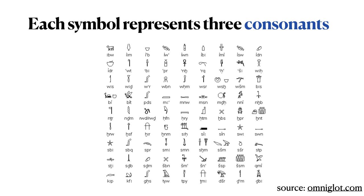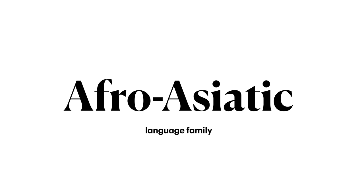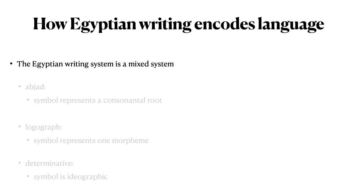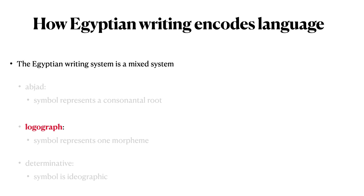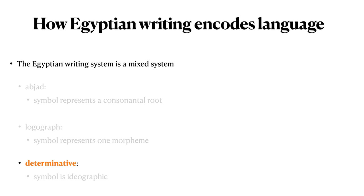You can do something not terribly dissimilar from this in English by taking an English sentence and pulling out the vowels — chances are you'll still be able to read the sentence. So, Egyptian is a mixed system with an abjad where symbols represent consonantal roots, logograph symbols that represent a morpheme, and determinative symbols that are more ideographic in nature.